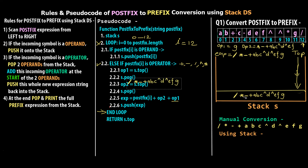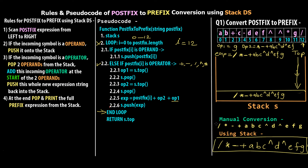After the loop, we return s.top(), which is our final prefix expression. Let me write it clearly: / * - + a b c ^ d ^ e f g. If you compare this with the manual conversion result, it is exactly the same — which means our rules and pseudocode are working perfectly fine. We have successfully converted the postfix expression to its corresponding prefix expression using the stack data structure and this pseudocode.